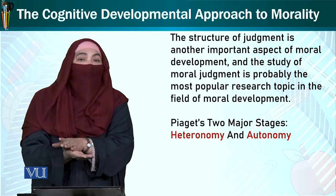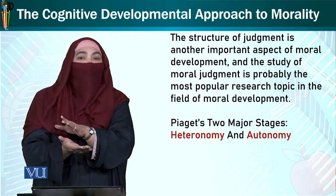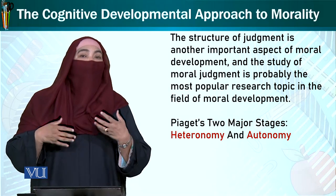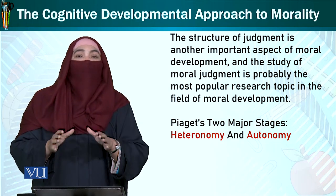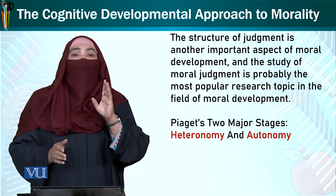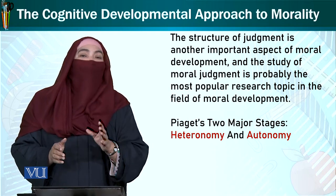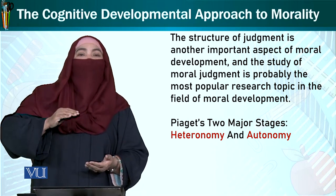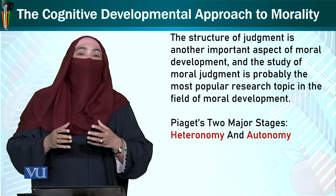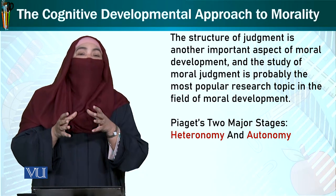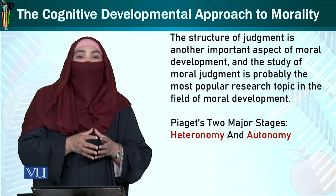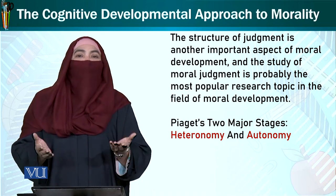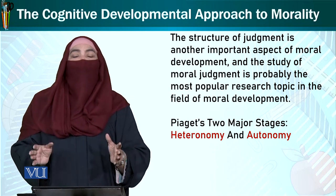Kaun is waqt saza ka, usko saza milni chahiye — kis ko is waqt inaam milna chahiye, ya kis ke saath achha suluk karna hai, kis ke saath achha nahi karna — ye decision-making aapke cognitive process pe base karti hai. Piaget humein yeh theory deta hai ke jaise jaise bachye bade hote jaate hai aur unke cognitive processes better hote jaate hai, to woh yeh reasoning better taur se kar sakti hai. Shuruaat mein woh yeh sochti hai ke jis cheez peh saza mil gayi, bas woh buri hai; jis cheez peh inaam mil gaya, woh achi hai.